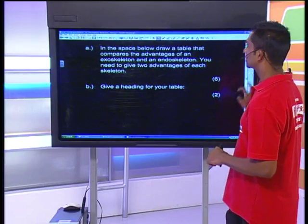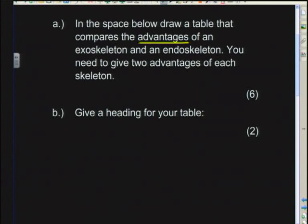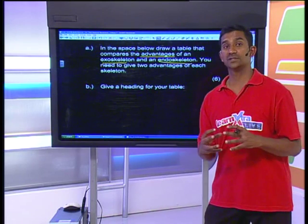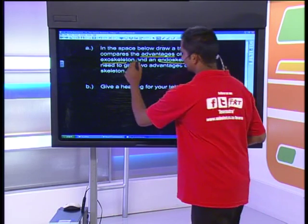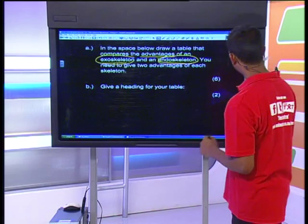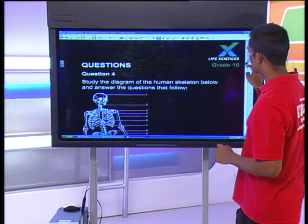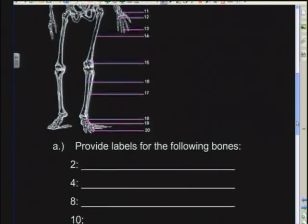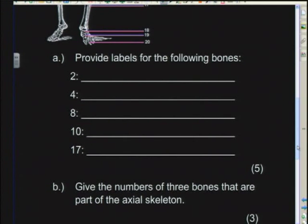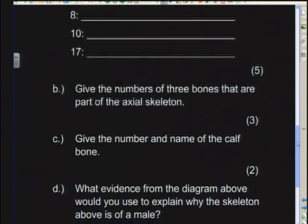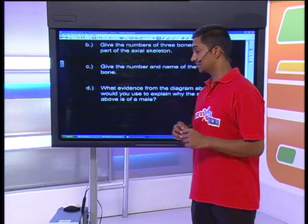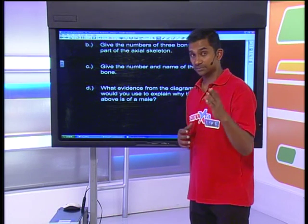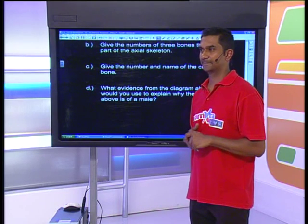In the space below, draw a table comparing the advantages of an exoskeleton versus an endoskeleton — give two advantages of each. Download these notes; they are excellent revision questions. We also have a diagram of the skeleton and you are asked to label the different parts. I may not have time to go through all of them, but you have access to the notes and can download them.